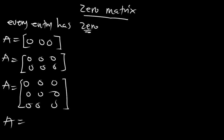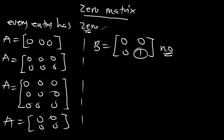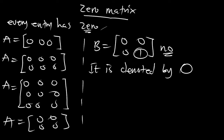All the entries are zero for a zero matrix. Is B a zero matrix? No, because this place is 1, which does not make this matrix a zero matrix. All the entries should be zero. A zero matrix is mostly denoted by O. In proper manner, this is how we write a zero matrix.